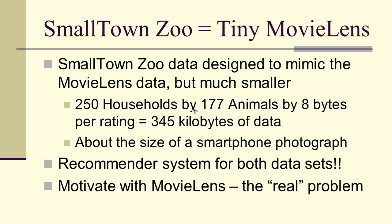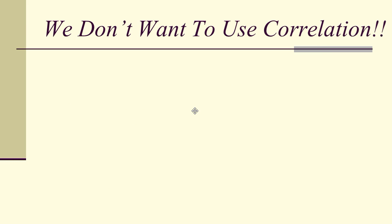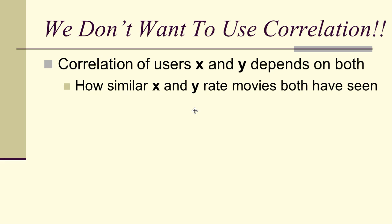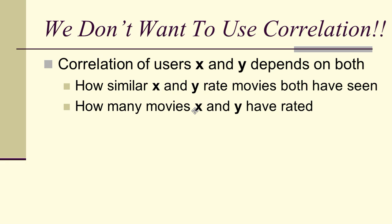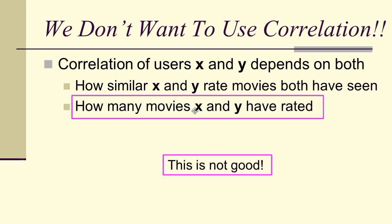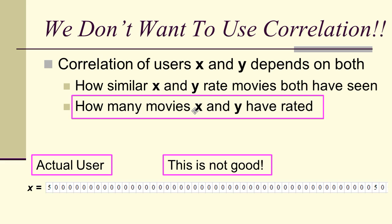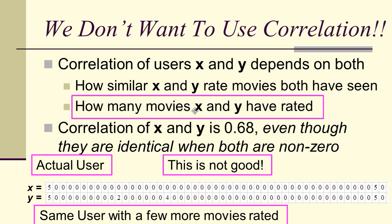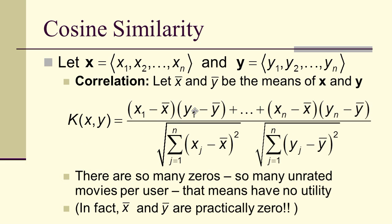First off, we don't want to use correlation. When we correlate two users x and y, it depends both on how similarly x and y rate movies they've both seen and how many movies x and y have actually rated. This is not good. For example, take an actual user and create an observation that's identical except with a few more movie ratings added. The correlation is only 0.68 even though for the movies they have in common they're identical.